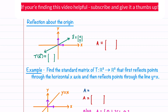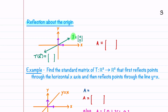The last reflection is reflection about the origin. When we reflect our vector x about the origin, it becomes T of x equal to (-x, -y). E1 transforms to (-1, 0) and E2 transforms to (0, -1). Our standard matrix is [[-1, 0], [0, -1]].